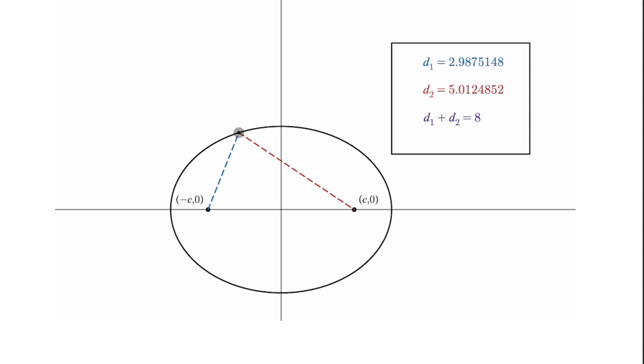If you add up the distances from that point to each of the foci, it's always going to come out to be the same sum. So as you see here, the distance from this point to this focus here is 2.987.